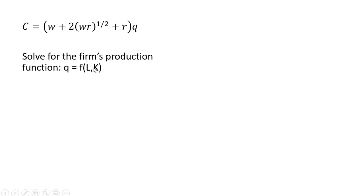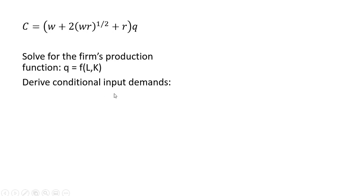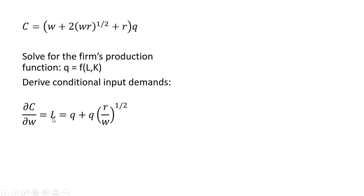We want to solve for the firm's production function as a function of labor and capital. To do that, we're going to derive conditional input demands. We're going to take the partial derivative of this cost equation with respect to the wage, and that will be our conditional input demand for labor, conditional on the level of output Q. The partial derivative will look like this.